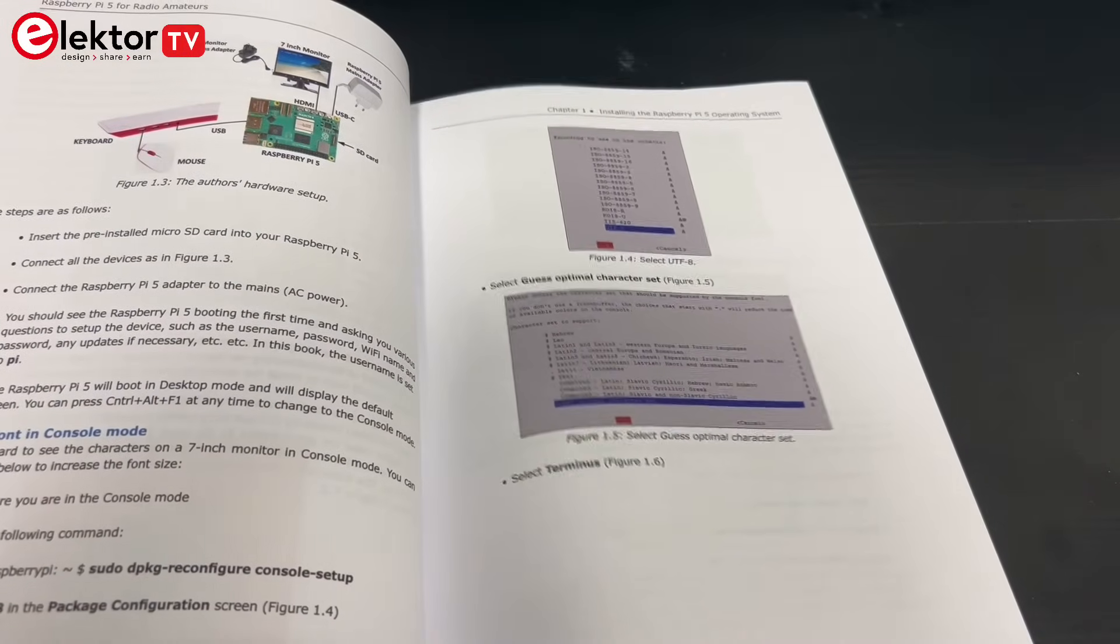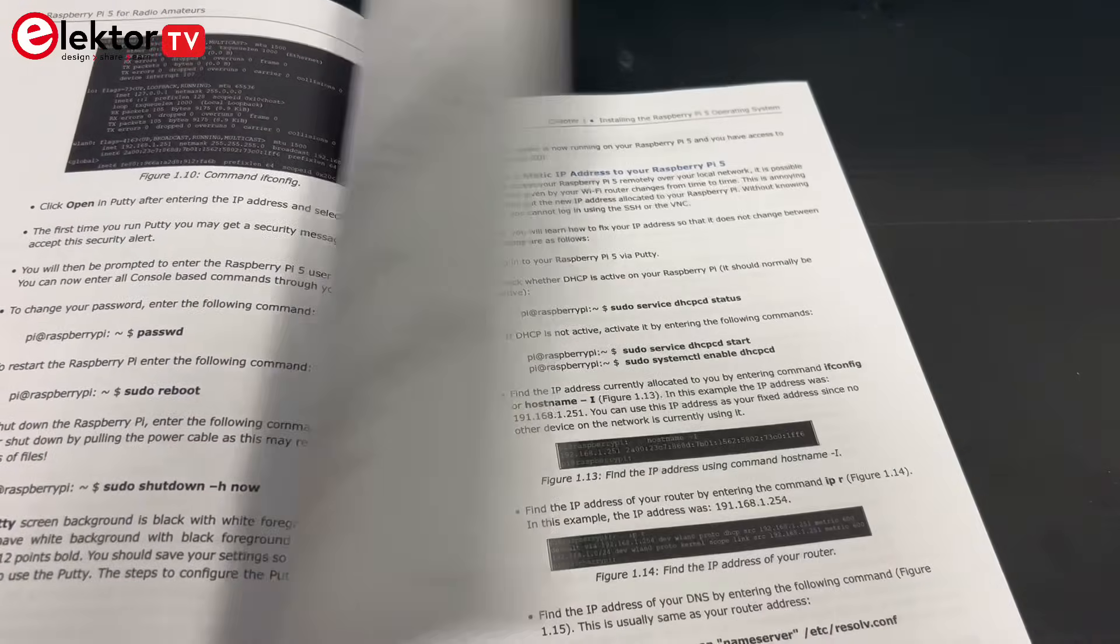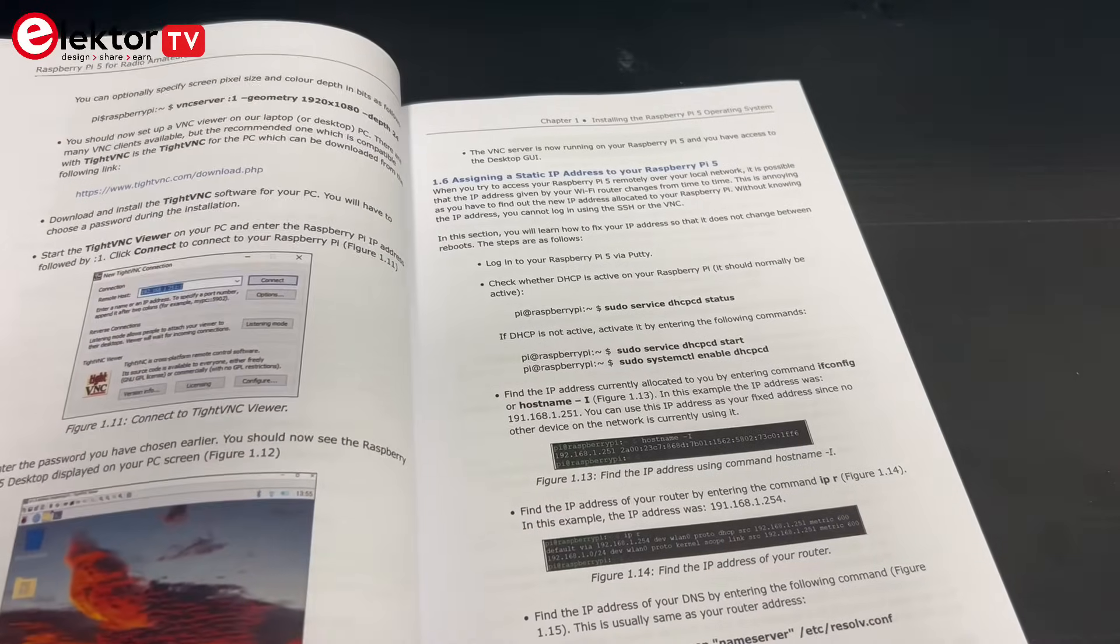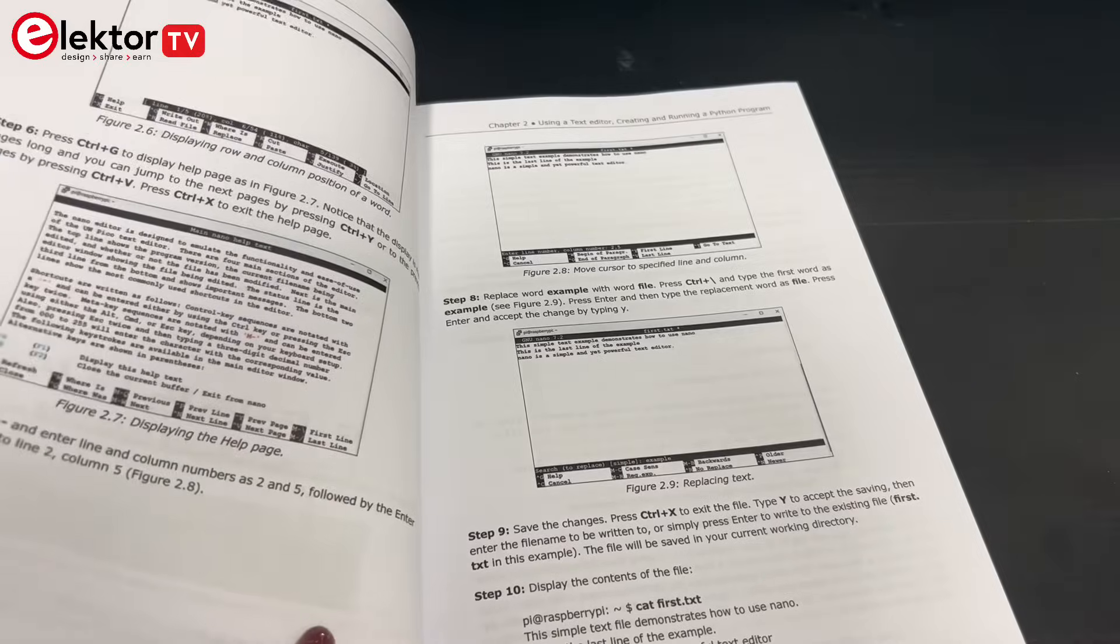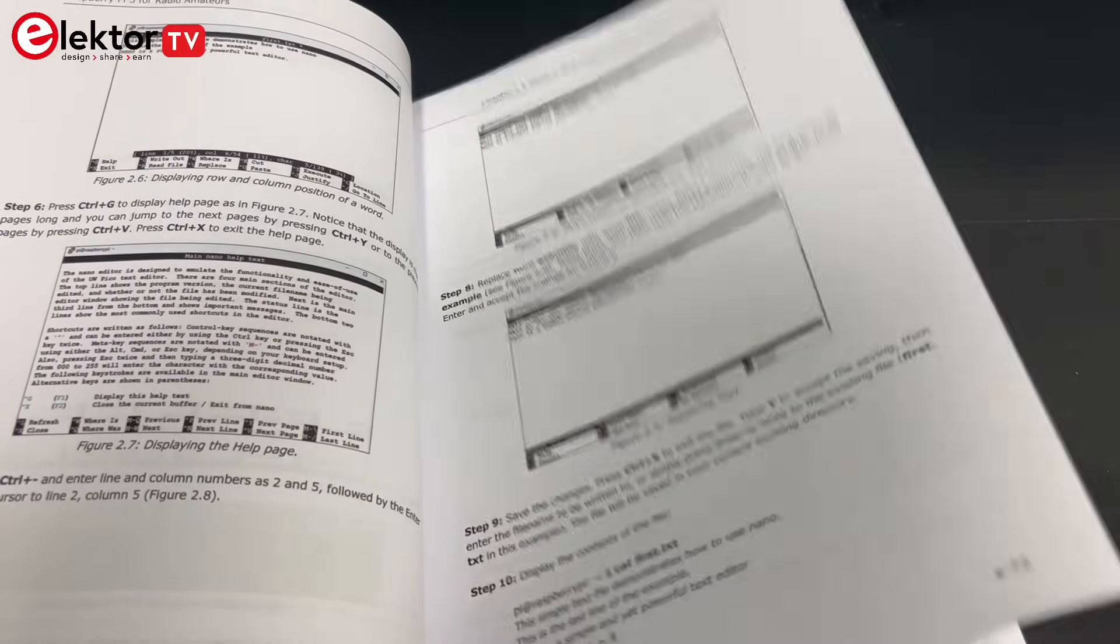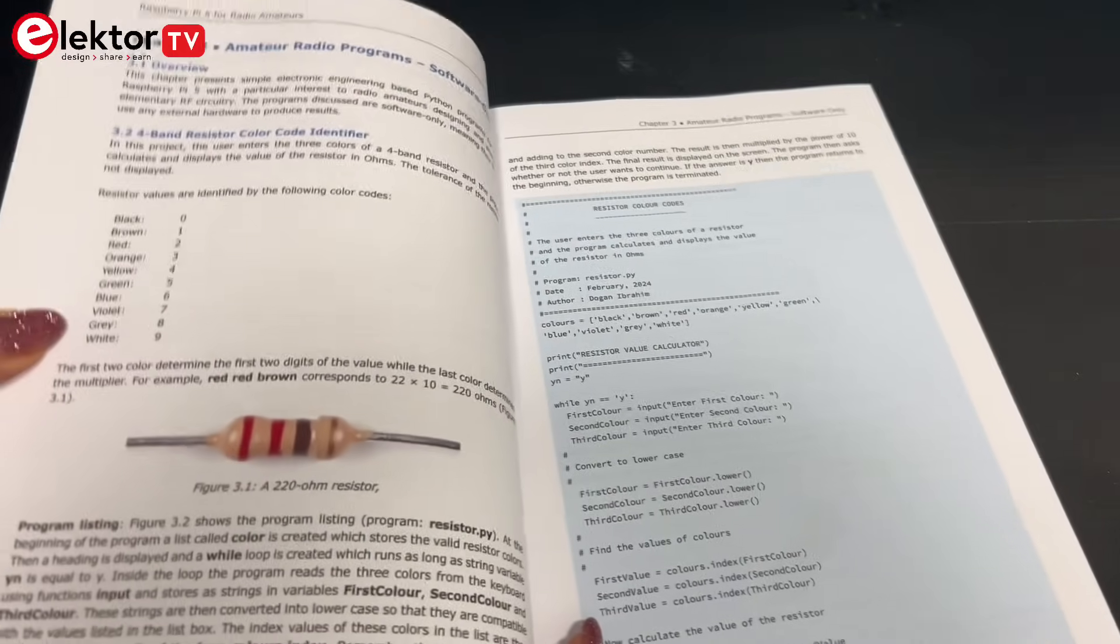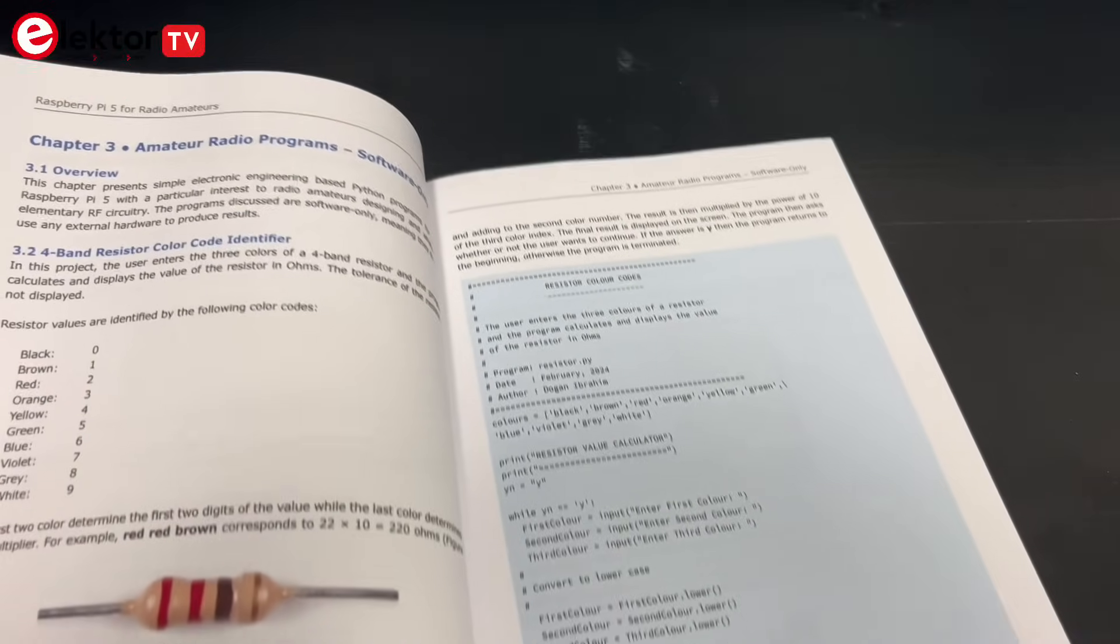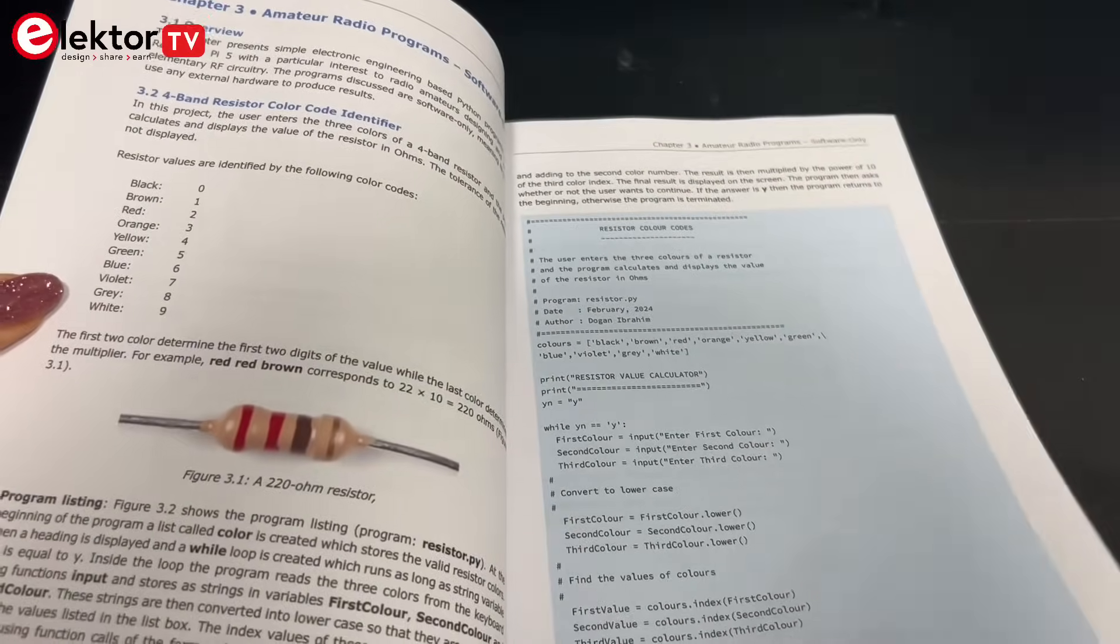It covers the Raspberry Pi setup, providing step-by-step instructions on installing the operating system and connecting your Raspberry Pi to a wired network. It also offers an introduction to Pi5 with practical examples tailored for radio applications, including both software and hardware-based projects for amateur radio.